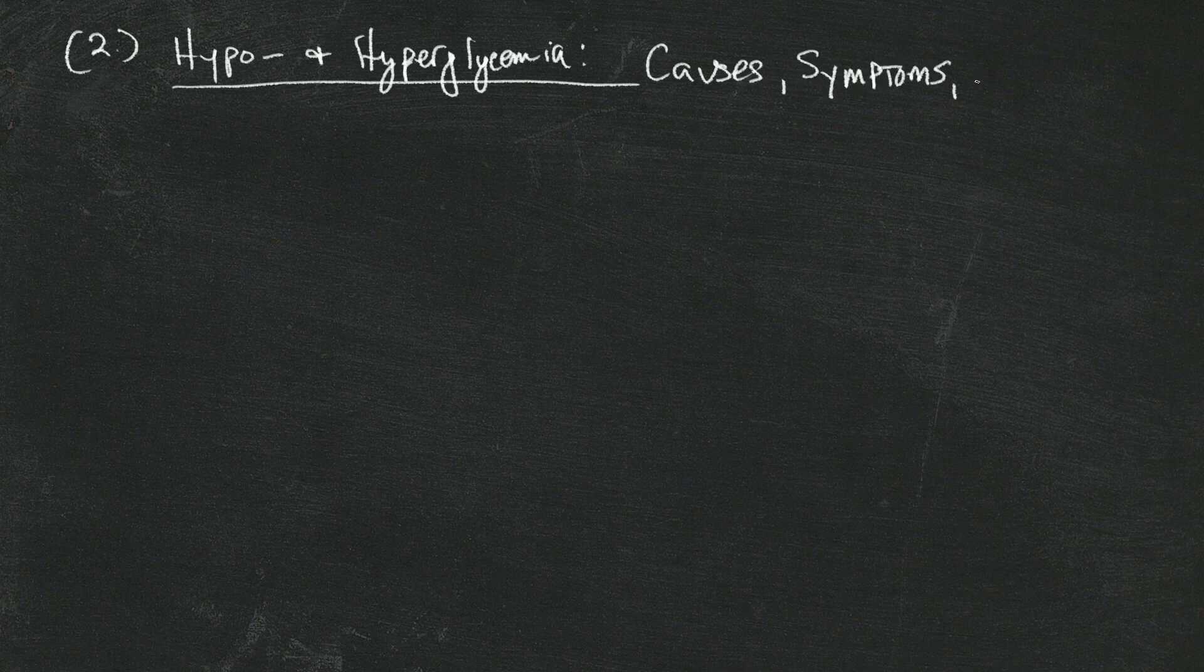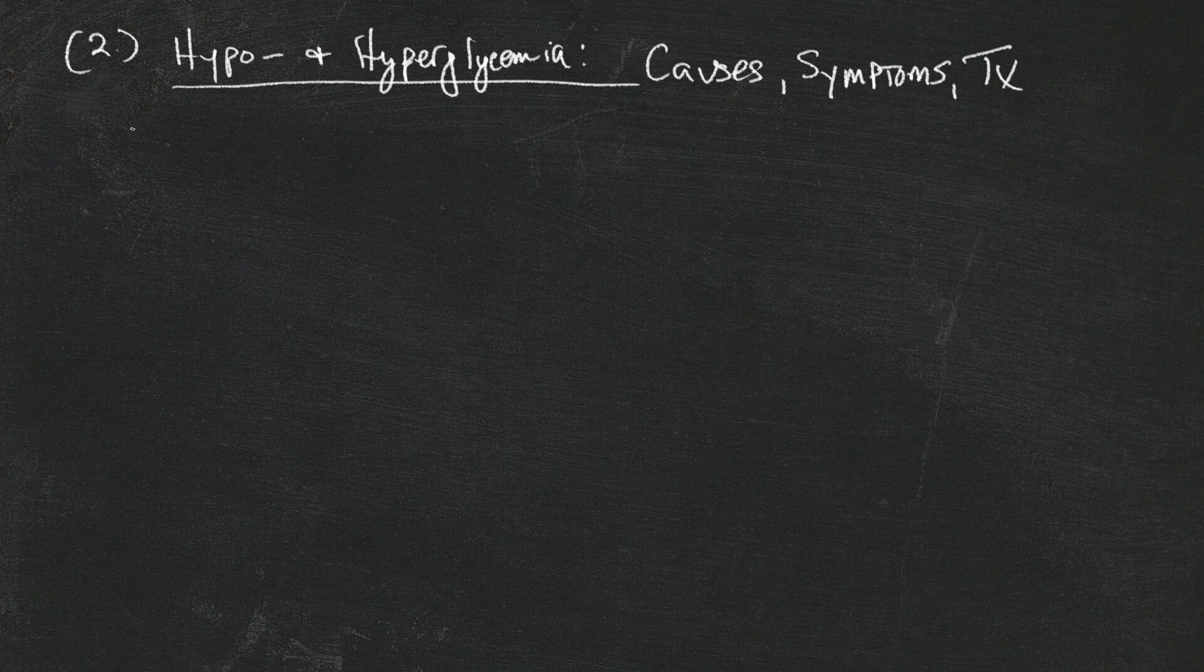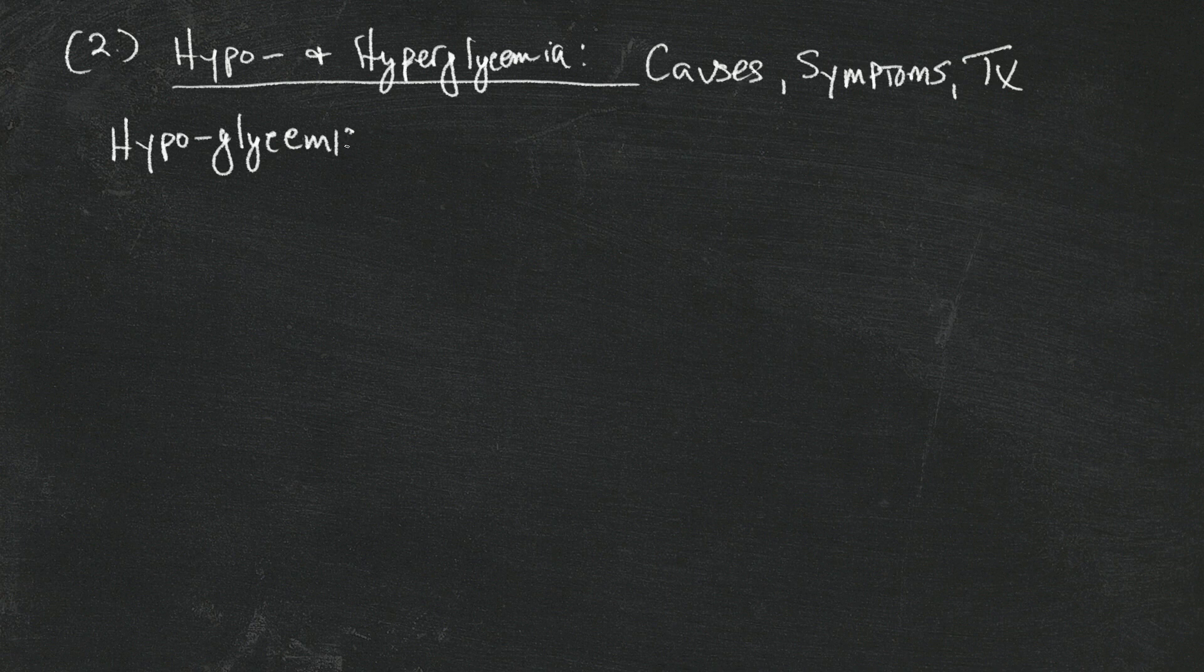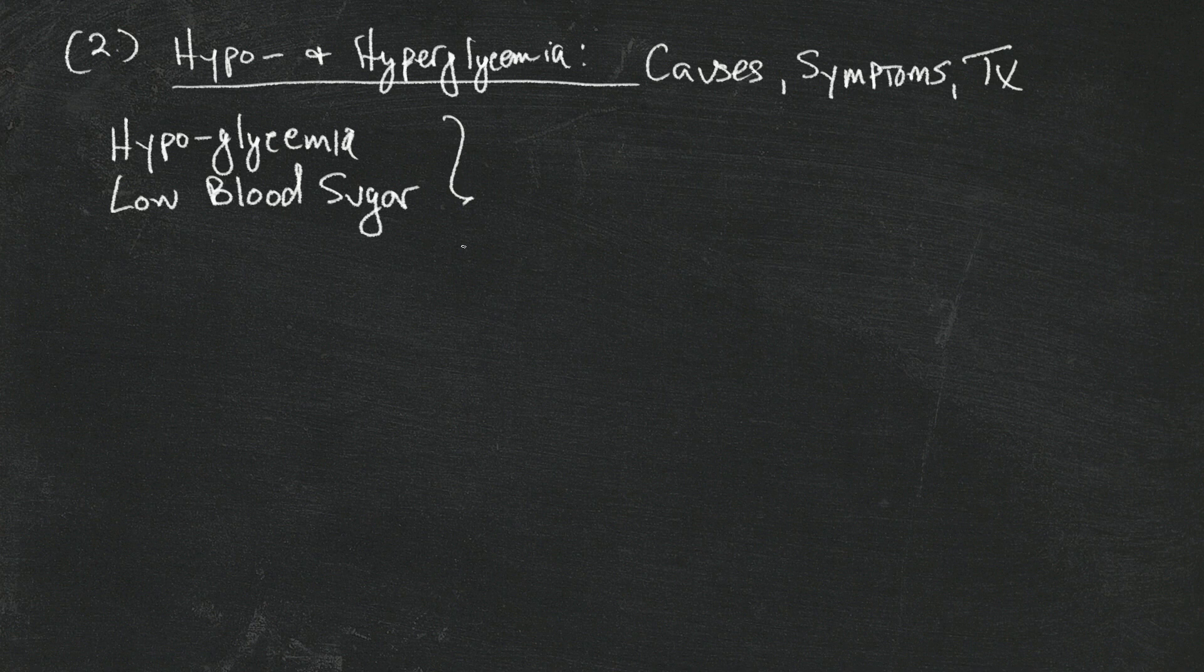Okay, topic two: hypo and hyperglycemia. It's important to go over this stuff as part of the overall understanding of what's involved in managing diabetes on a daily basis. So hypoglycemia is just a fancy name for saying low blood sugar.